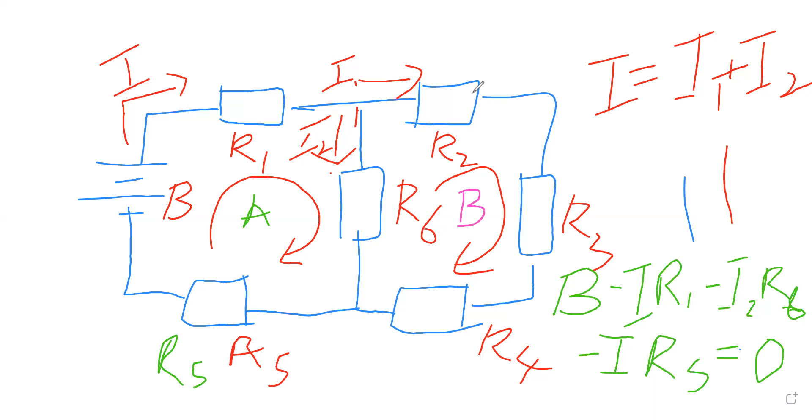Loop B. In loop B there are no batteries, but you can just go through the loop starting from the purple point. Since I1 flows through R2, a voltage drop of I1 R2 drops across that resistor.